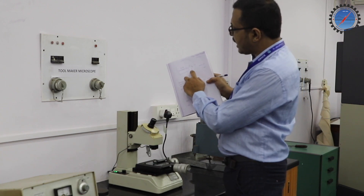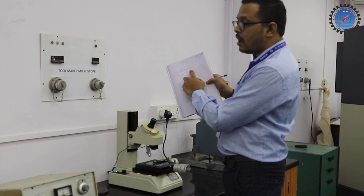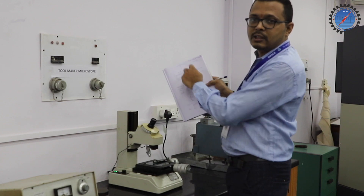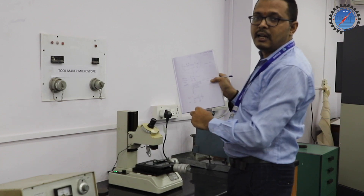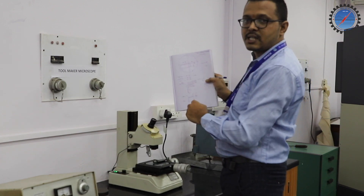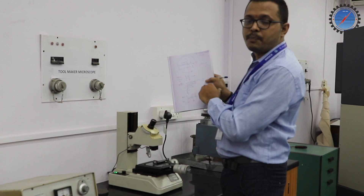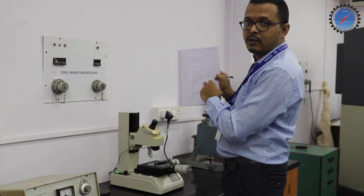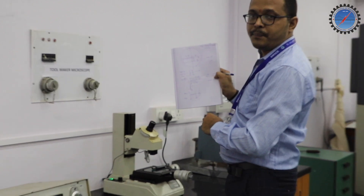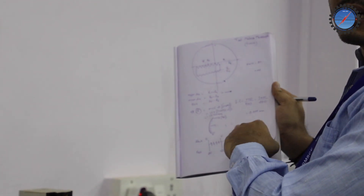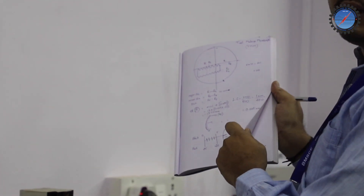Like that you can take R4, R2, and R3. This is how to measure the linear scale divisions for measuring pitch and major/minor diameter. Next, we are going to measure the angle of the thread.